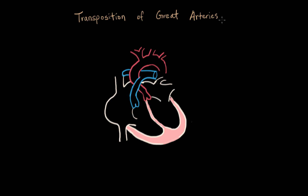Transposition of the great arteries literally means the aorta being where the pulmonary artery is supposed to be, and the pulmonary artery being where the aorta is.